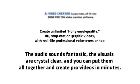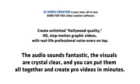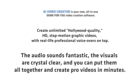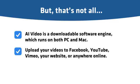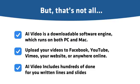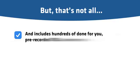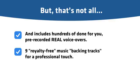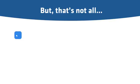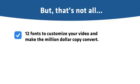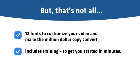The audio sounds fantastic, the visuals are crystal clear, and you can put them all together to create pro videos in minutes. AI Video is downloadable software that runs on both PC and Mac. Upload your videos to Facebook, YouTube, Vimeo, your website, or anywhere online. Includes hundreds of done-for-you written lines and slides, hundreds of done-for-you pre-recorded real voiceovers, 9 royalty-free music backing tracks, 11 background images, and 12 fonts. Also includes training to get you started in minutes.